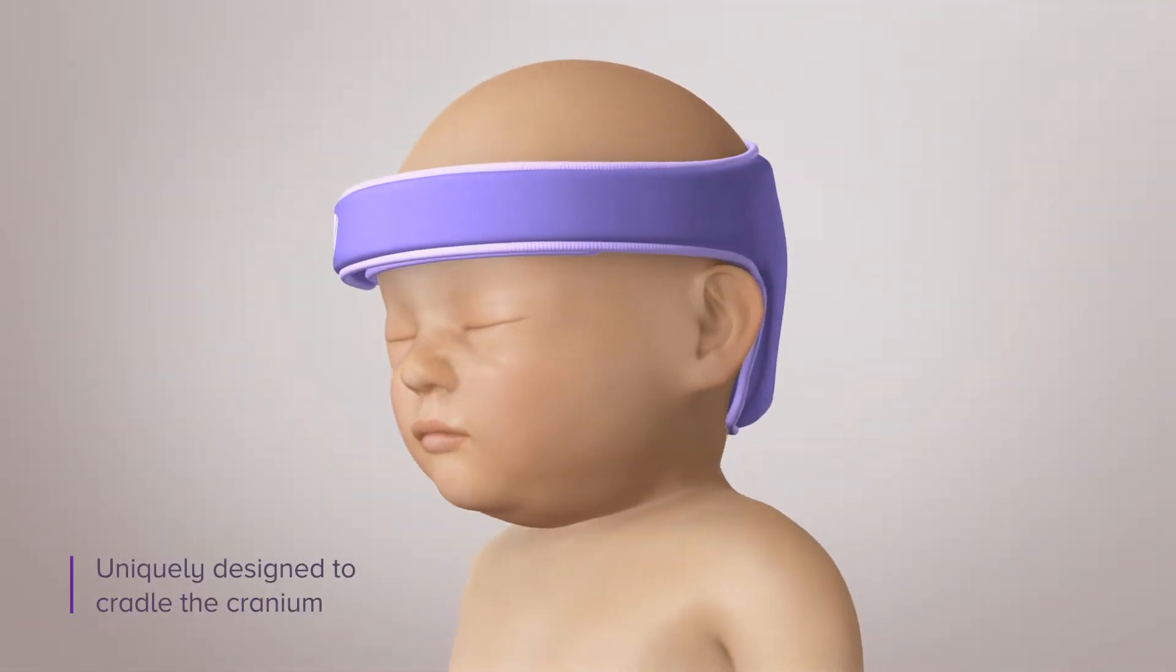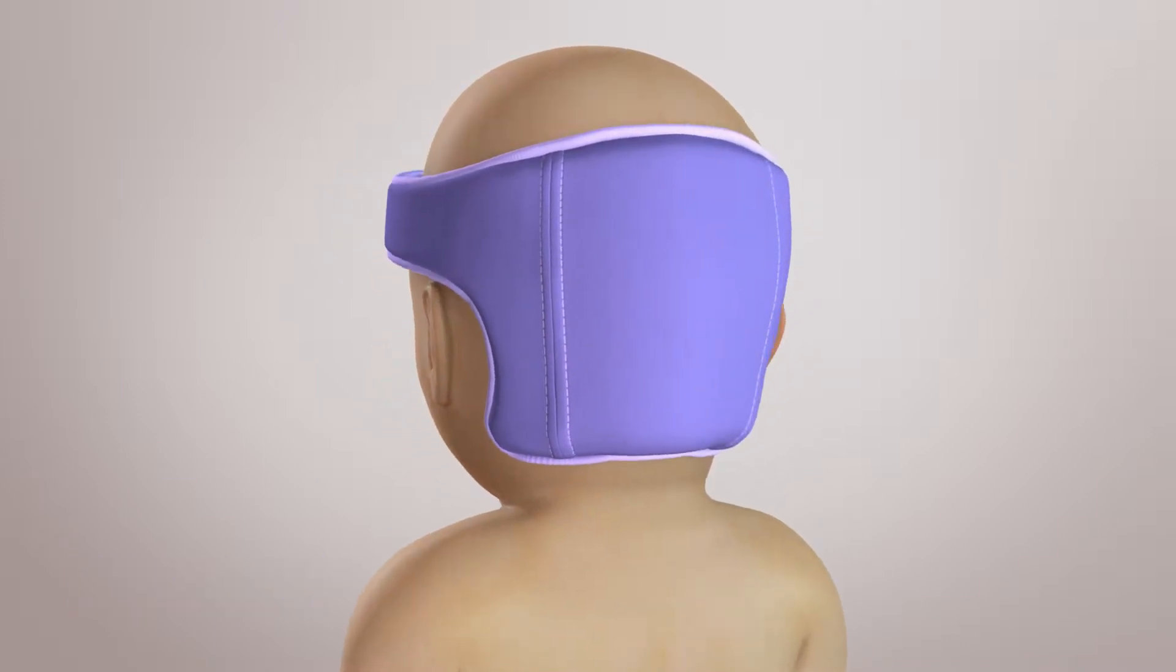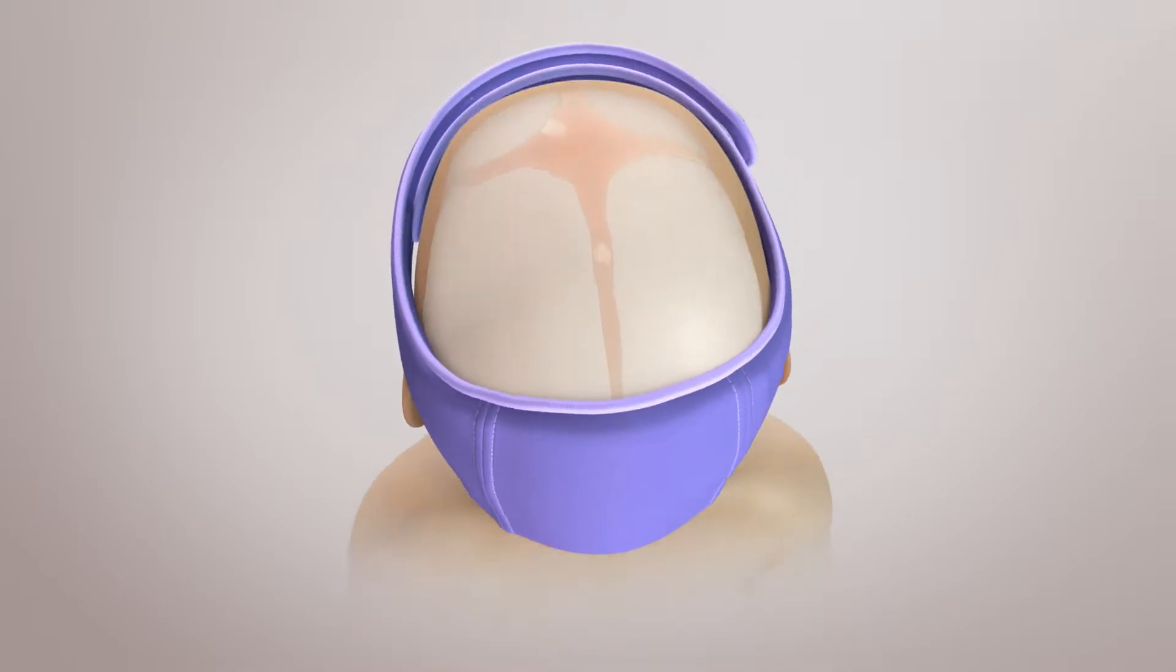Uniquely designed to cradle the cranium, the GelShield wraps around the infant's head to provide protection to the fragile, still-forming structure.